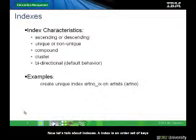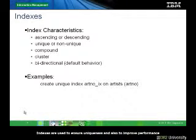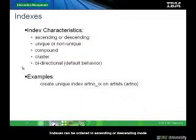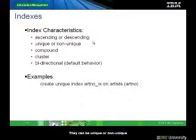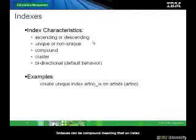Now let's talk about indices. An index is an ordered set of keys, each pointing to a row in a table. Indices are used to ensure uniqueness and also to improve performance. Indices can be ordered in ascending or descending mode. They can be unique or non-unique. Unique indices mean that repeated values are not allowed, which is helpful to uniquely identify a record in a table.